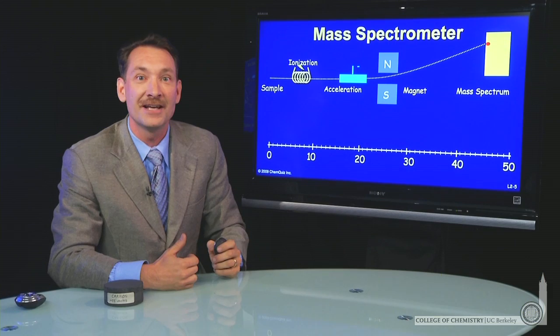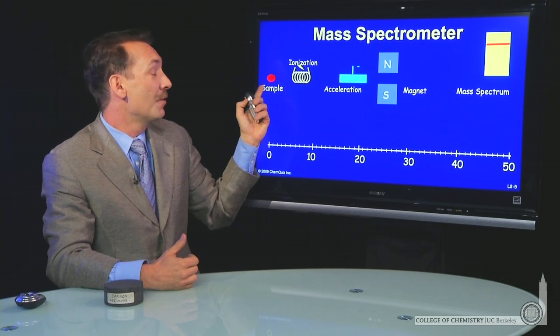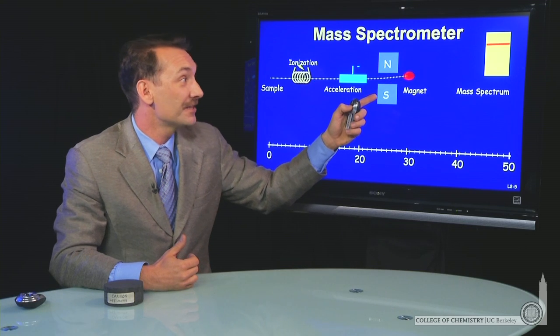Now, that was a relatively small mass. Let's look at a larger mass coming through the same system. We're going to ionize it. It's not deflected as much.